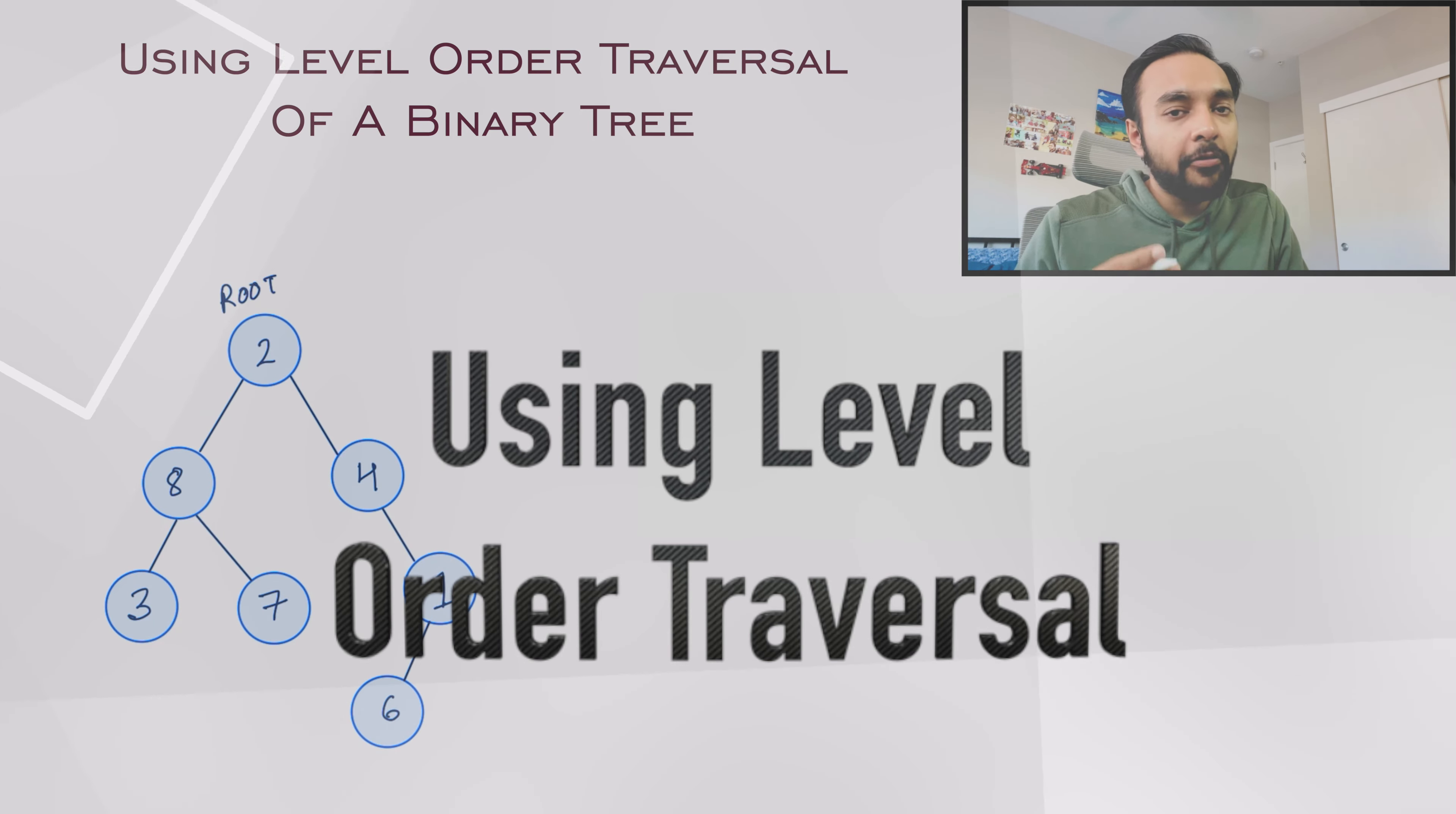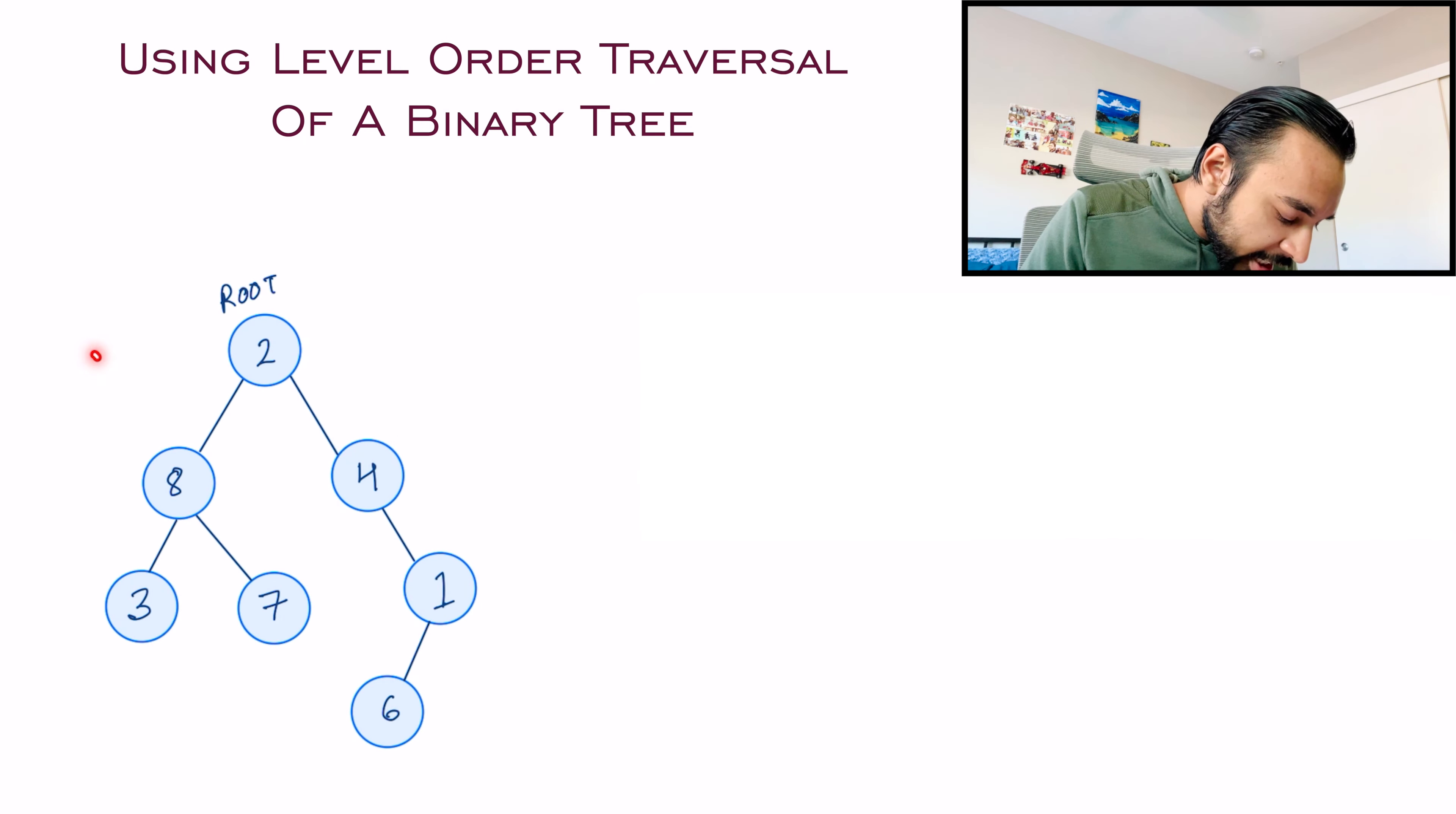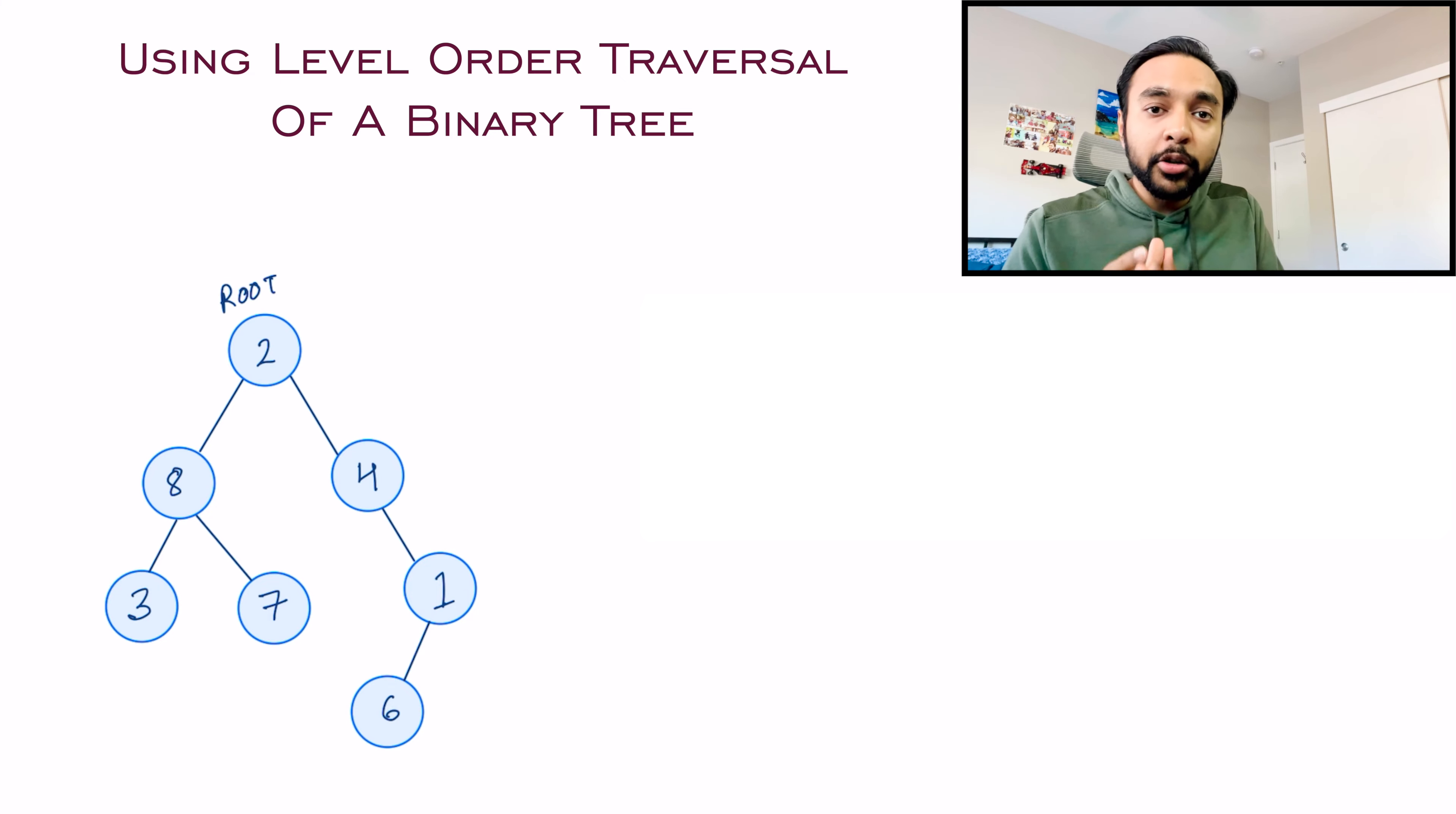As soon as you start solving this problem, one thing becomes very obvious. You need to figure out a way how you can travel individual level one at a time. What you will do is first travel the first level, then move on to level two, then level three, and then level four, and so on. So this is actually the concept of level order traversal. If you're new to level order traversal, I would highly recommend you to check out my video on level order traversal first, because that is the basic concept on which this problem works.